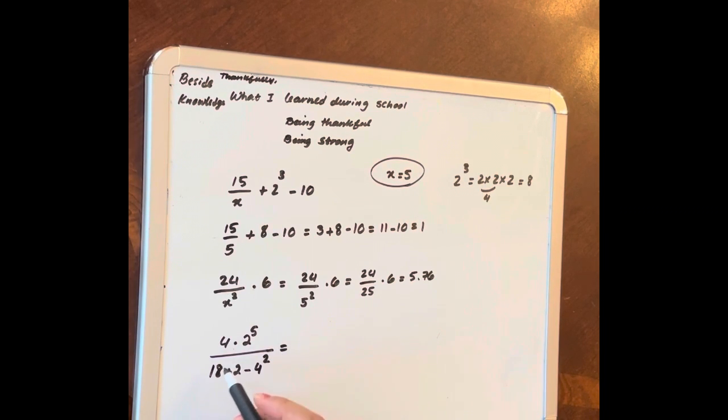So we say 2 to 5 is 32. 4 multiplied by 32 over 18 plus 2 is 20, minus 4 to 2 is 16.